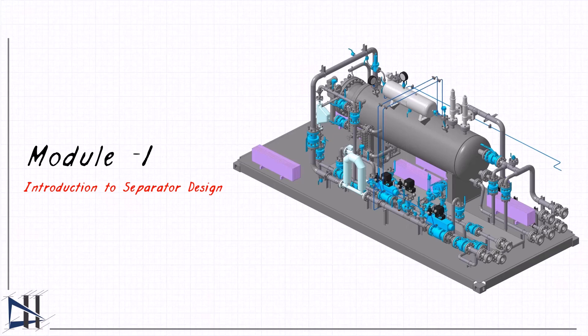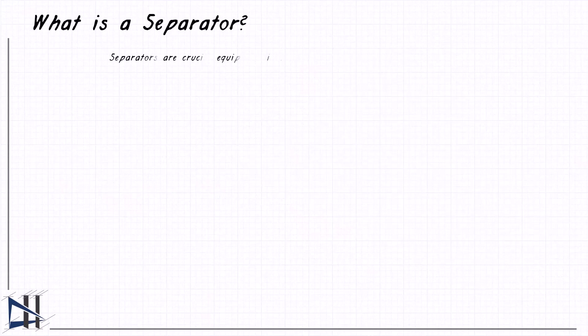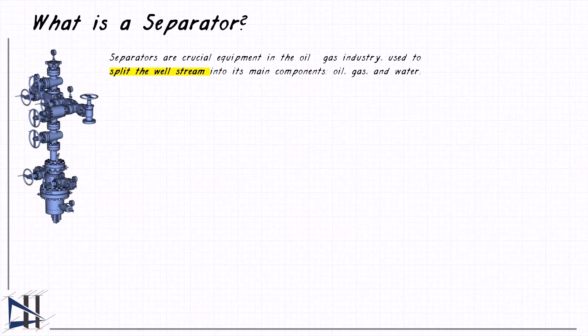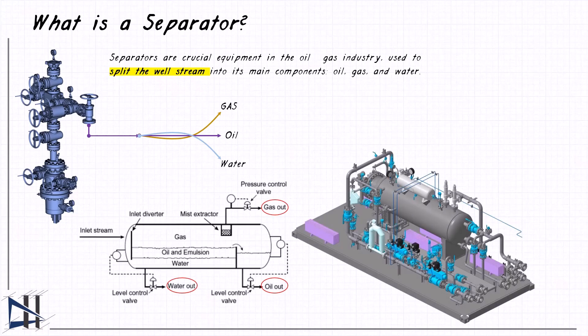Separators are critical in splitting a well stream into its primary components, oil, gas, and water, and ensuring that each phase is properly handled for downstream processing or transportation. Let's begin by understanding how this equipment helps optimize production.